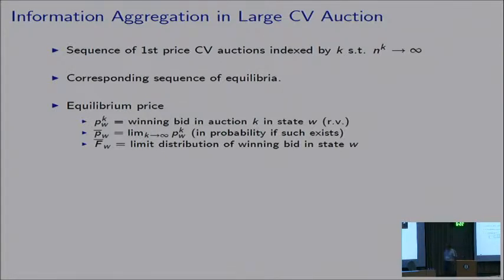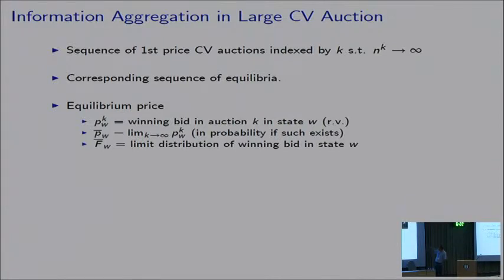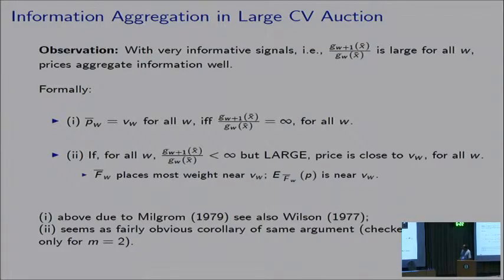Let's start with the ordinary common value auction. We look at a sequence of first-price common value auctions indexed by K, where the number of bidders goes to infinity. We look at the corresponding sequence of equilibria. The equilibrium price P_{W,K} is the winning bid in auction K in state W — a random variable. P̄_W is the limit in probability of this sequence, and F̄ is the limit distribution of the winning bid in state W.